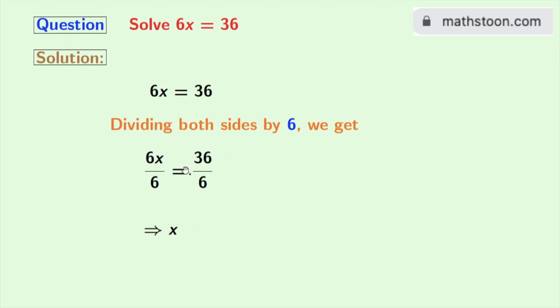And in the right hand side, we will write 36 as 6 times 6 and we have 6 in the denominator. Again see that the 6s cancel out. So we are left with 6. So x is equal to 6 is our final answer.